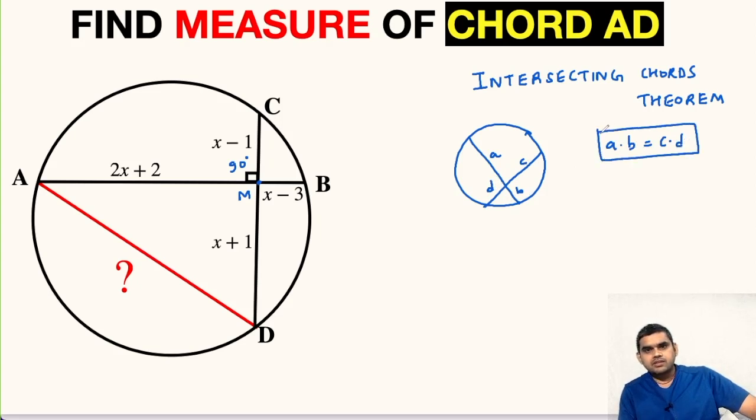So using this theorem, we can write here that AM multiplied with MB is equal to CM multiplied with MD. Now we have the value of AM in terms of X, that is 2X plus 2, MB as X minus 3, CM as X minus 1, and MD as X plus 1.